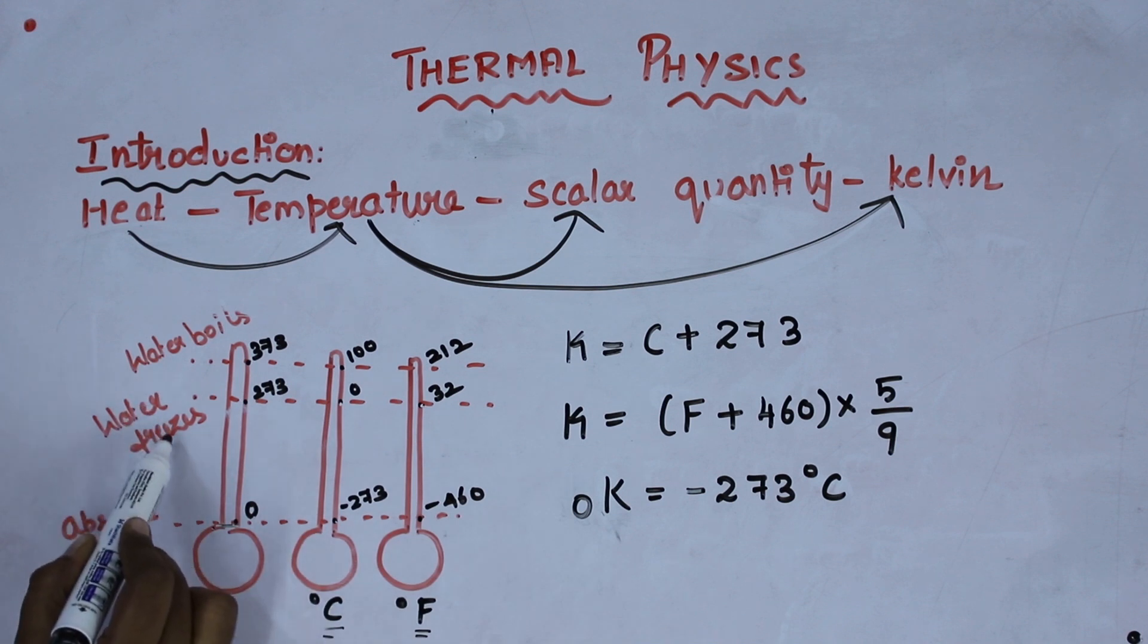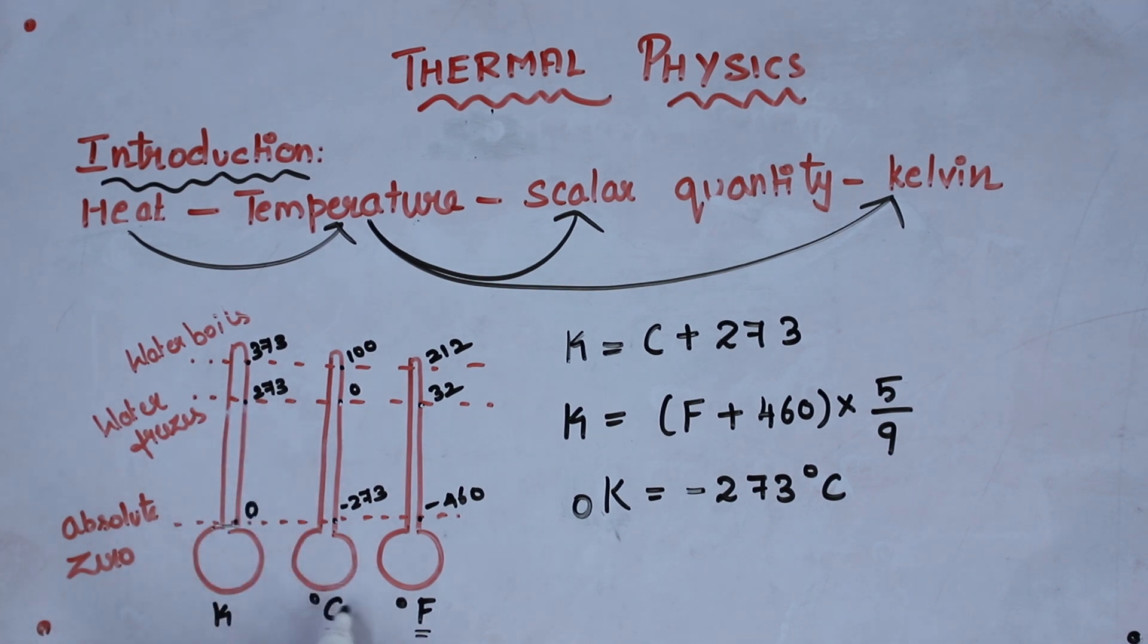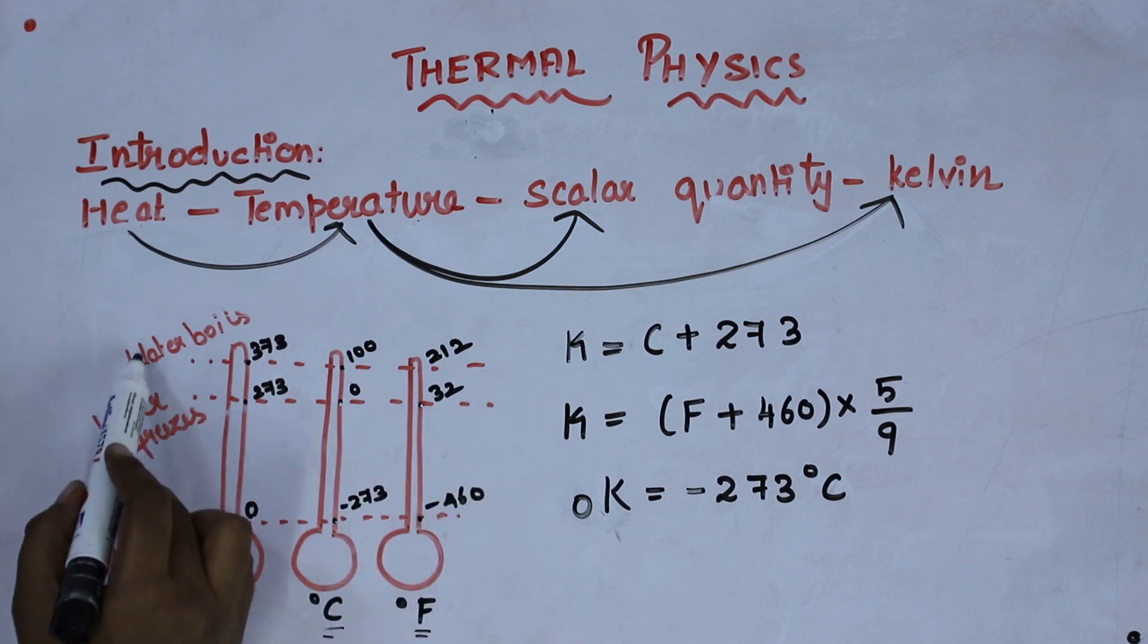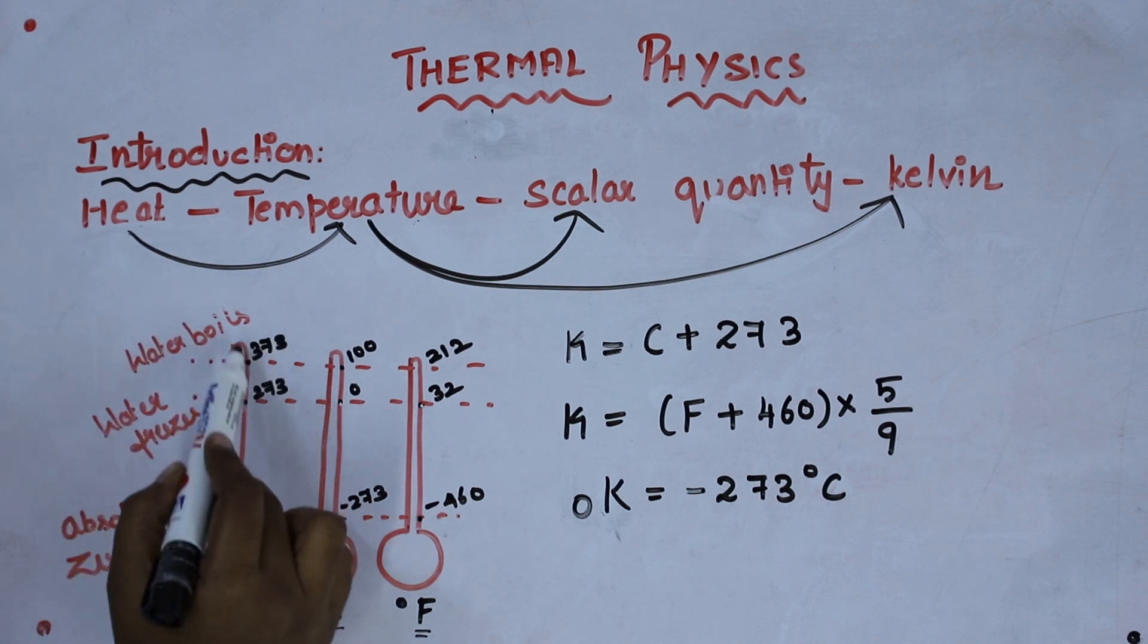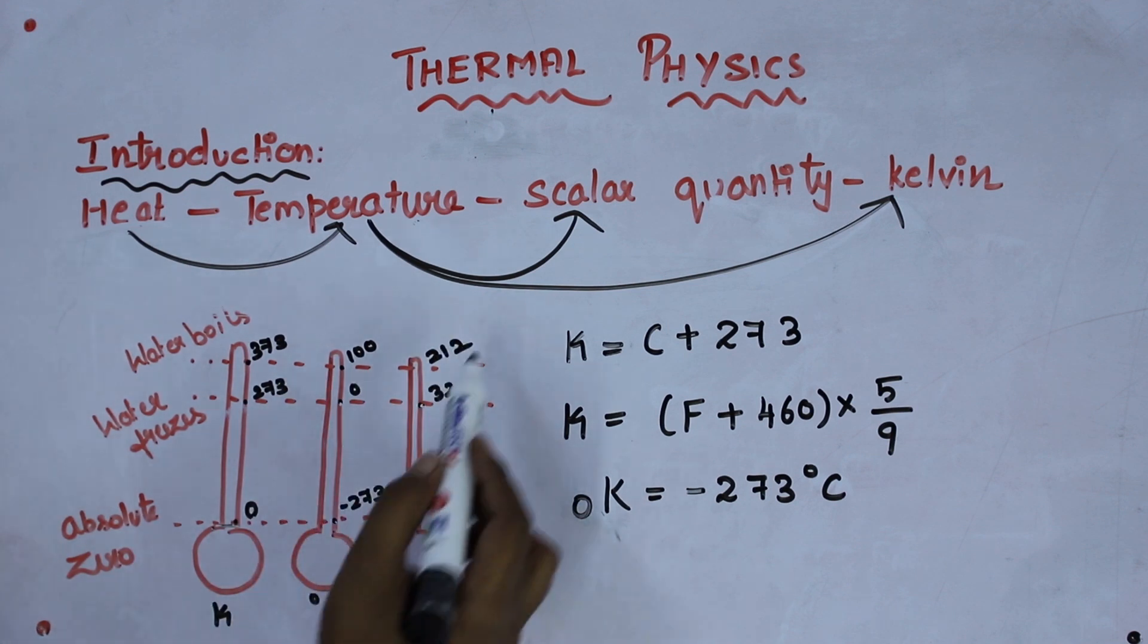When water freezes, the value in Kelvin scale is 273 whereas in Celsius it is 0 degree and for Fahrenheit it is 32 degree. In Kelvin scale the water boils at 373 whereas in Celsius 100 and for Fahrenheit it is 212.